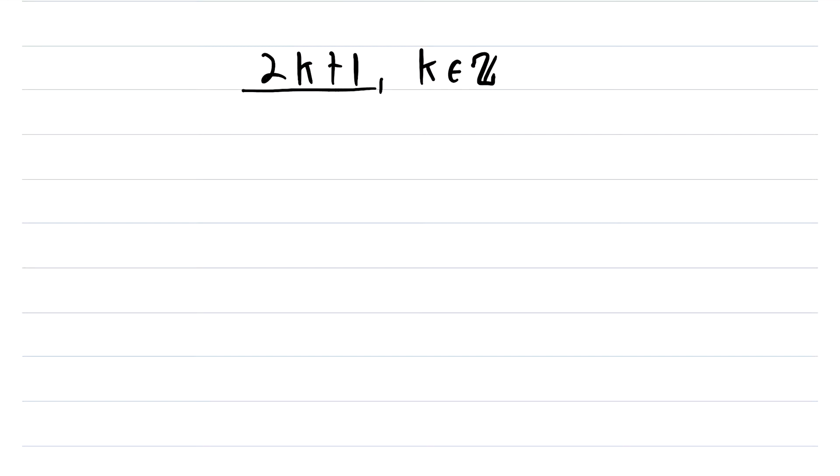So we can use this 2k plus 1 as an odd number in our proof, but remember the proof is about two odd numbers. So we're going to need one more. So let's define another odd number 2j plus 1 where of course j is an integer.